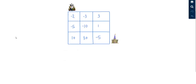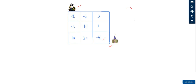Let's understand the problem with an example. We have a dungeon of dimensions 3×3; the princess is in the bottom right cell and the knight starts from the top left cell. We need to find the optimal path giving the minimum initial health required. The knight can move only right and down.